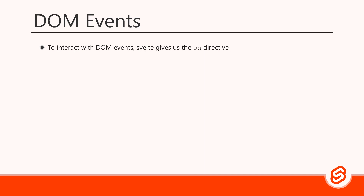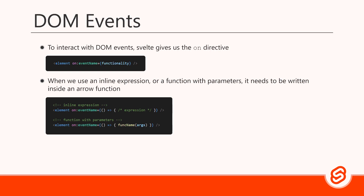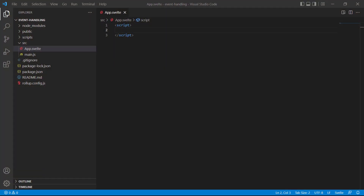To interact with these DOM events, Svelte gives us a directive called `on:`. To use it we write the `on` keyword followed by a colon and then any standard DOM event as the directive's value. We can either use an inline expression or a function. When we use an inline expression or a function with parameters it needs to be written inside an arrow function. The `on:` directive works for any standard DOM event like keyboard or input events.